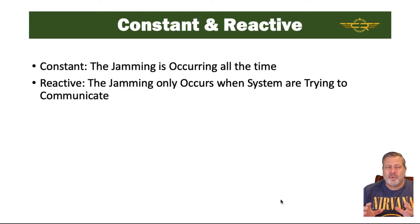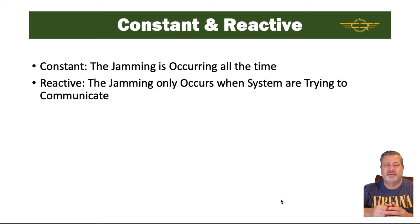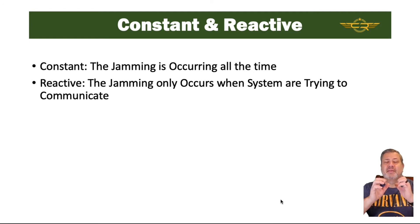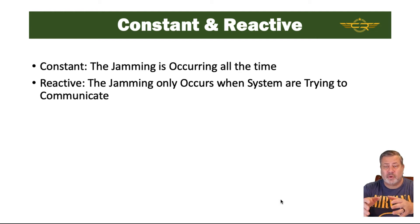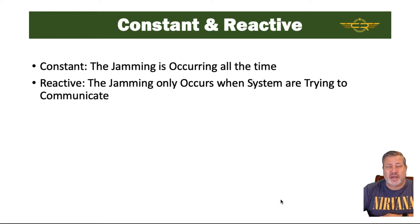There are a couple different types of jamming we need to be aware of: constant and reactive. In a constant attack, the jamming occurs continuously all the time. In reactive, the jamming only occurs when systems are trying to communicate on the network. It's also possible for interference from things like lights or microwaves to appear to be reactive jamming.